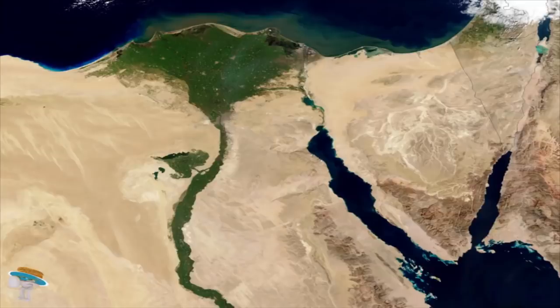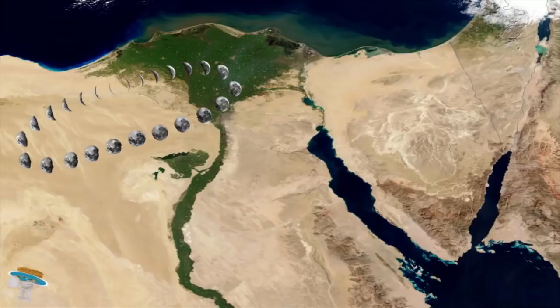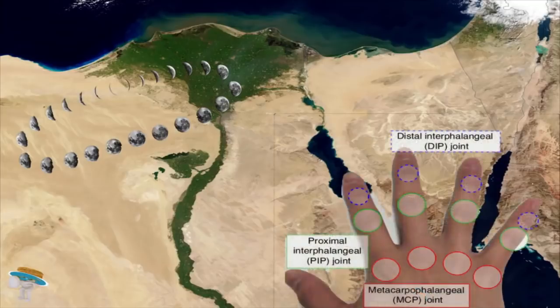The exact reason for the ancient Egyptians' value of the base 12 system isn't known, but there are several theories. Some believe it was based on the 12 lunar cycles in a year, while others actually believe that it's based on the 12 joints in your fingers on one hand when you exclude the thumb. And with the joint method, you can actually count to 24 by using both hands.